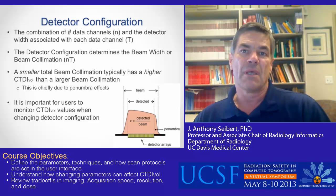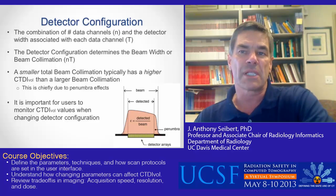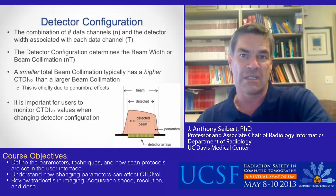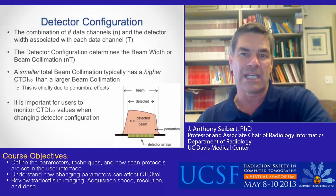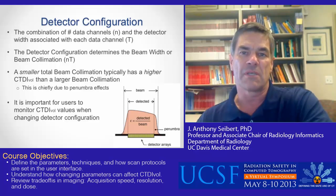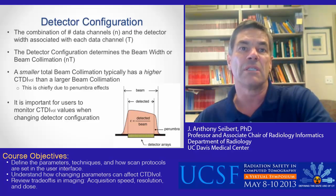Detector configuration: with multi-detector row CT scanners, there are many selectable combinations of data channels and detector widths associated with each channel. The detector configuration determines the beam collimation width, which is equal to the product of the number of channels N and the detector width T. The actual beam width is larger than the active detector array because of x-ray intensity variation in the penumbra. The efficiency of x-ray utilization is a ratio of the detected beam width to the actual beam width. In general, a smaller beam collimation has a higher CTDI vol than a larger beam collimation because the efficiency of detection is less. It is important to monitor changes in CTDI vol when changing the detector configuration.